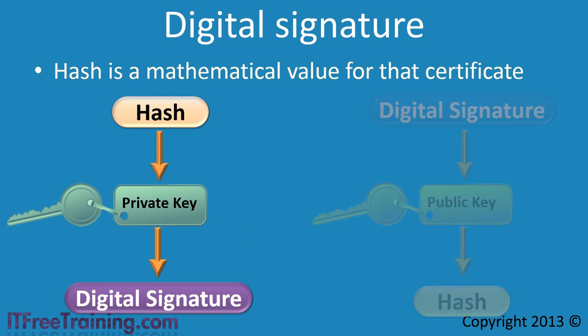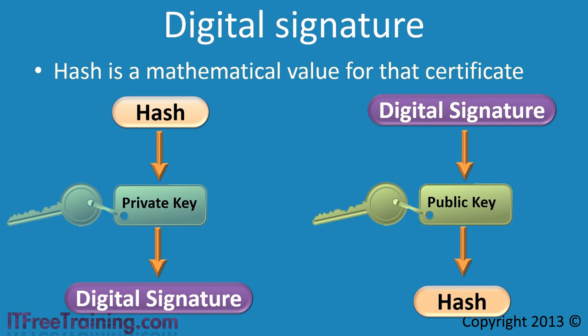To check the certificate, the digital signature is put through a mathematical function using the public key. The result should be the original hash value. If this value is not obtained, the person knows the certificate is corrupt or has been tampered with. The hash function is a one-way process, which means you cannot use the hash value to generate the original certificate. This essentially means that even though the private key is used in the process, it is not possible to use the digital signature to obtain the private key.